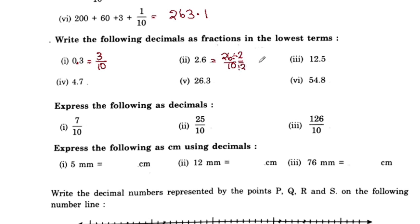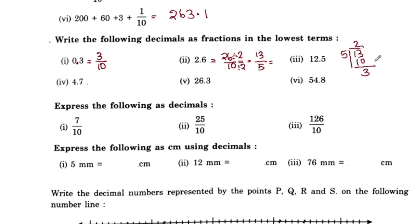26 divided by 2 is 13. 10 divided by 2 is 5. Now we have a mixed fraction. 13 divided by 5: 5 twos are 10, remainder is 3. So we have the mixed fraction 2 and 3 by 5.